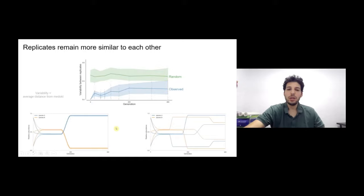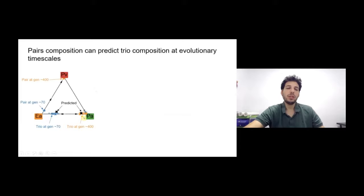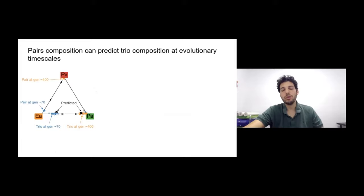So between the two extremes of perfect repeatability and randomness, we're much closer to perfect repeatability — not entirely repeatable, but much closer to that end. Given that things are repeatable, we thought that if we knew the pair composition during co-evolution, we could use that to predict the composition of trios. Showing the same example trio as before, this time I'm adding information about the fraction of pairs at generation 400.